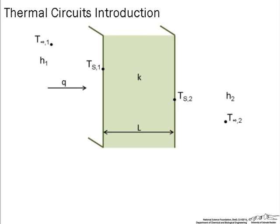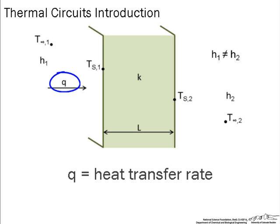The surrounding temperature on the left has a heat transfer coefficient of h1, and out here is h2, and h1 does not equal h2 in this particular problem. How do we solve for q in this situation?